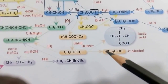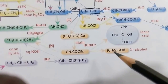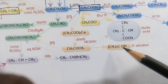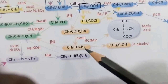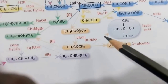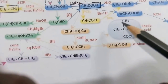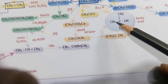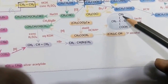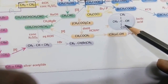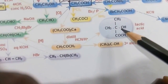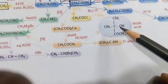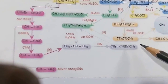Acetone treated with CH₃MgI (methyl magnesium iodide) gives a tertiary alcohol — tertiary butyl alcohol (3° alcohol). When acetone is treated with HCN and the product is hydrolyzed, we get lactic acid, also known as 2-hydroxypropanoic acid.